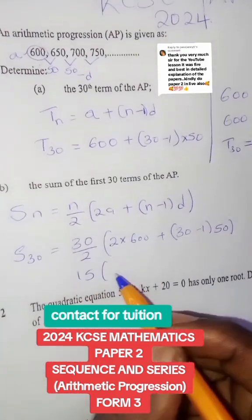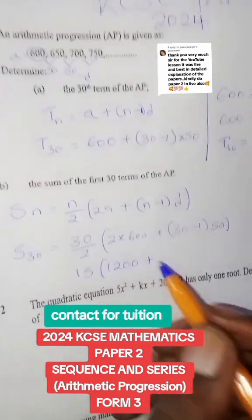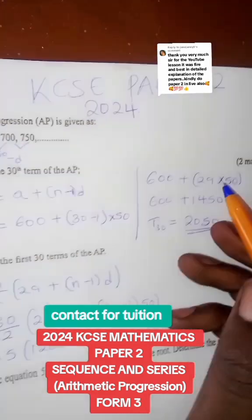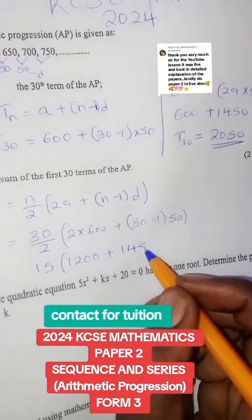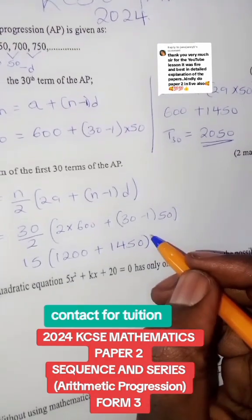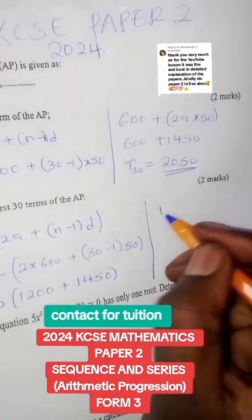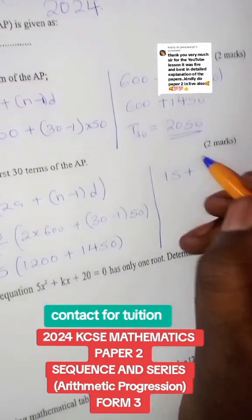We have 15 into 1200 plus this one here we have solved it on top, so we can just take the value there, 1450. Adding the ones in the bracket, we will have 15 times